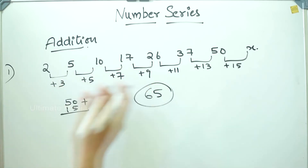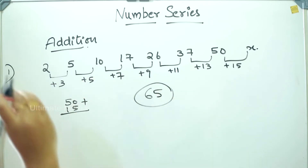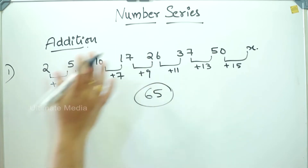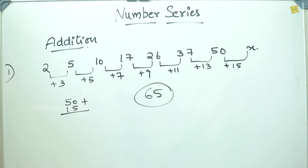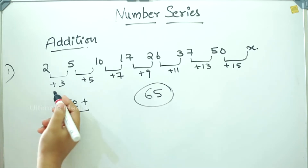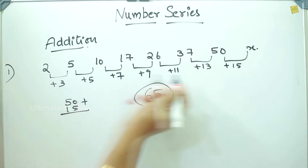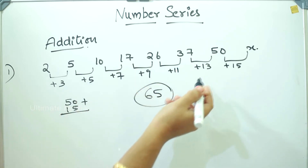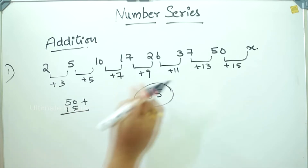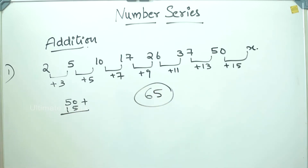The pattern going on here is odd numbers — there are odd numbers as differences. Then, what is the answer? 65. Let's go to the next pattern.